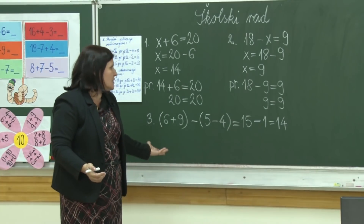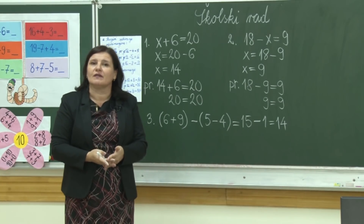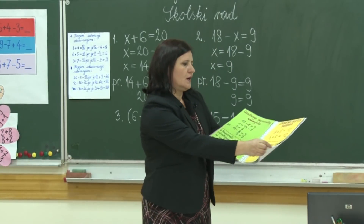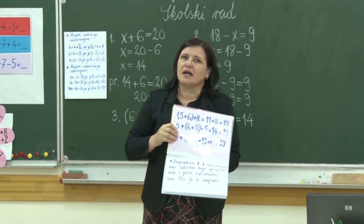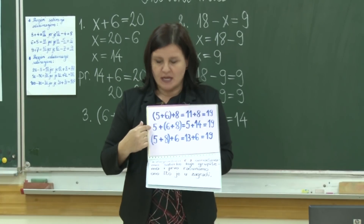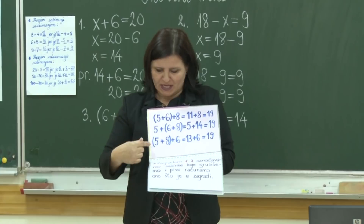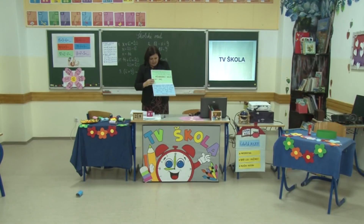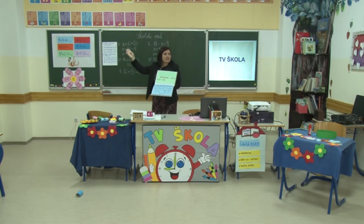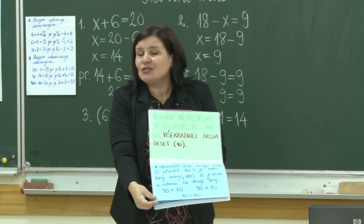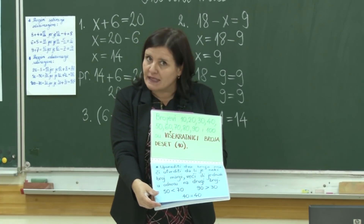Učiteljica je pokušala na jedan malo drugačiji način da vam prikaže ovu matematiku i da ne bude teško. Završit ću sa svojom slikovnicom. Zagrade gdje imamo tri sabirka — kad je na početku zagrada, prvo nju rješavamo pa dodajemo broj iza. Kad je broj na početku, prvo njega prepisujemo pa rješavamo zagrade. Višekratnici broja 10 — zadatak smo radili: 50 minus 30. Šta znači uporediti dva broja? Odrediti koji je broj veći, manji ili jednak.